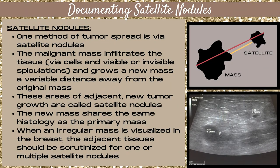We're going to talk about satellite nodules. One method of tumor spread is via satellite nodules, meaning that the malignant mass infiltrates the tissue a short distance away, either via cells or visible or invisible speculations, and then grows a new mass a variable distance away from the original mass. These areas of adjacent new tumor growth are called satellite nodules.